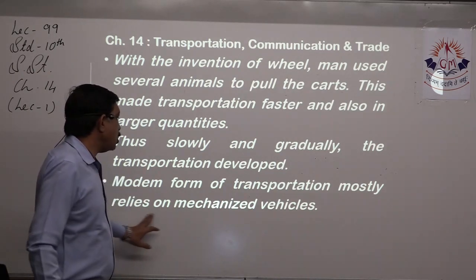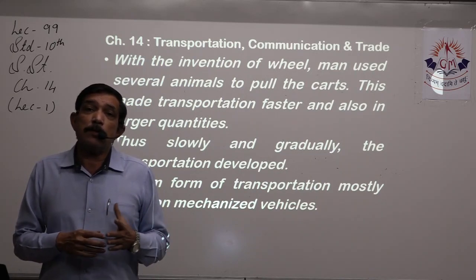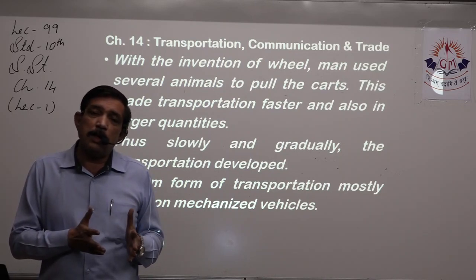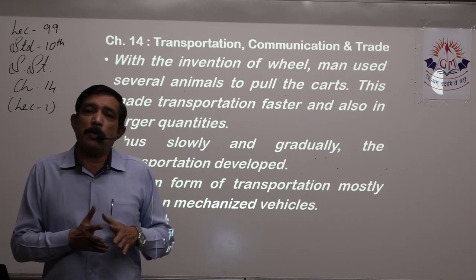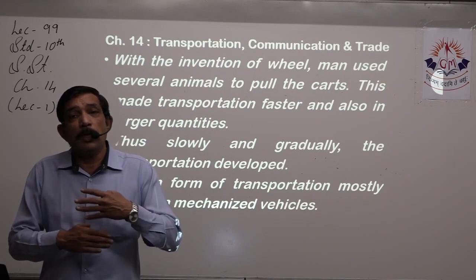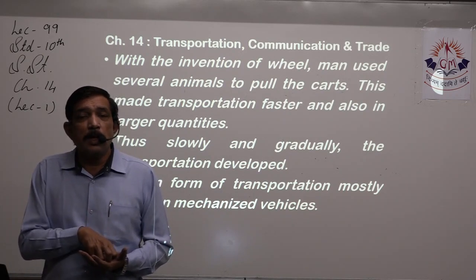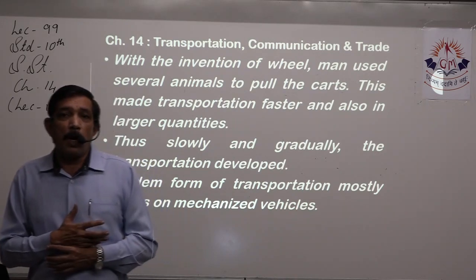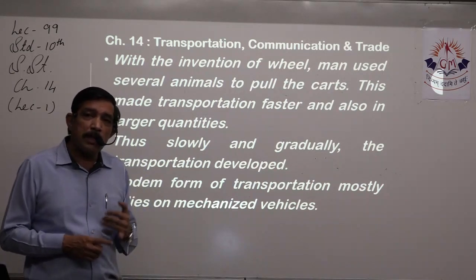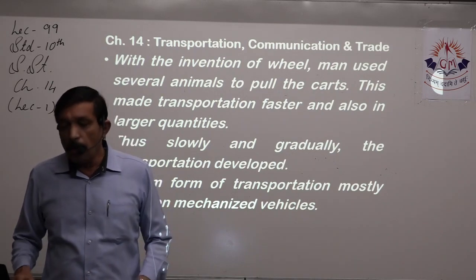Modern form of transportation mostly relies on mechanized vehicles. After the invention of the steam engine, things became quite fast. That same steam engine was used to run machines in factories, used in making railways, and used in ships to make them steamers. Gradually it took hundreds of centuries to arrive at the mechanized form. The mechanized form includes trucks, cars, railways, modern ships running on diesel, and aeroplanes — all mechanized transportation.